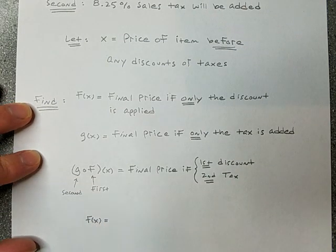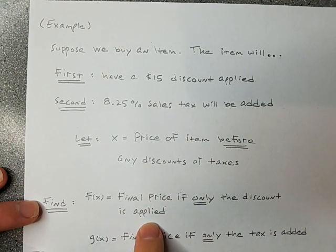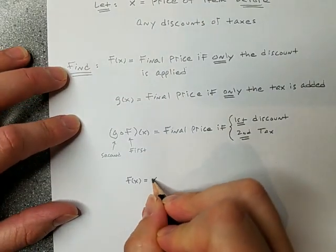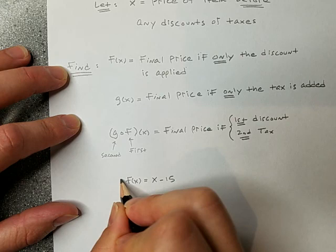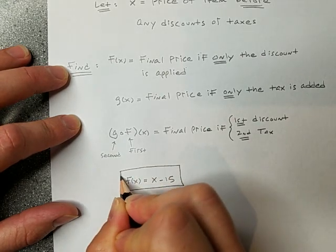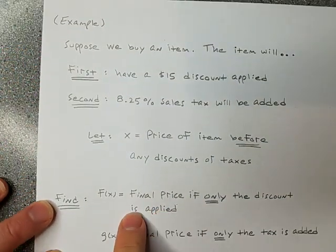So f of x, what's that do? The final price of the item, if only the discount is applied, well, the discount is $15. Wouldn't that be like this? You take the price and you subtract 15. Pretty simple. So there's f of x. There's my first answer. That's this function f of x.